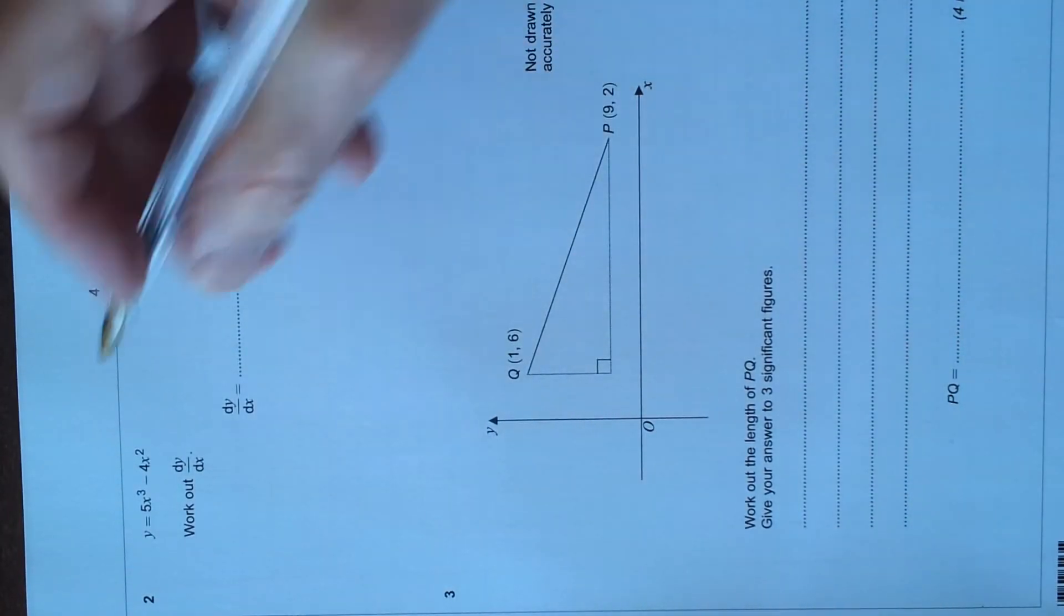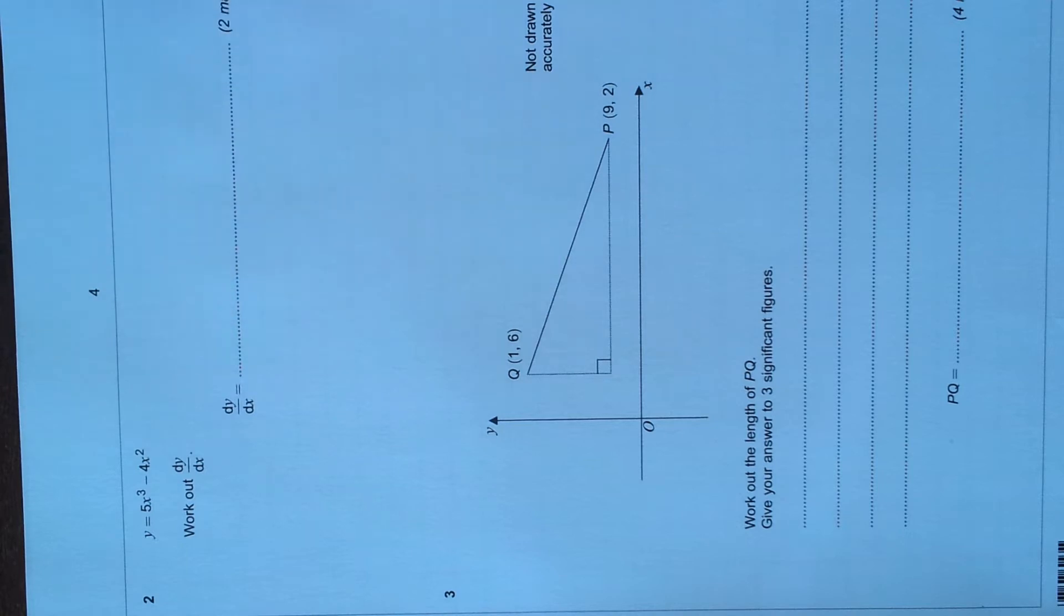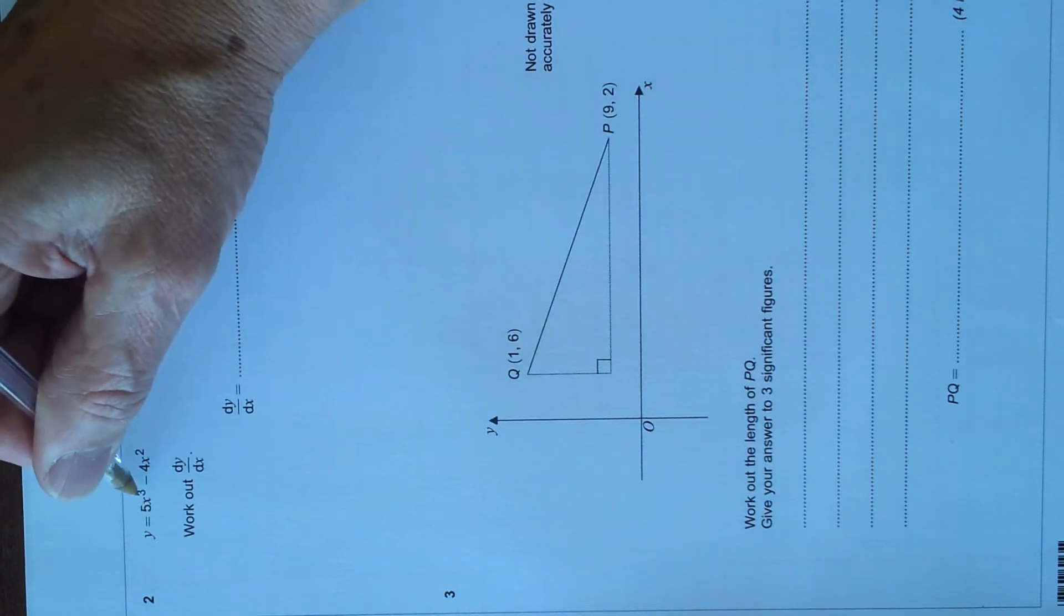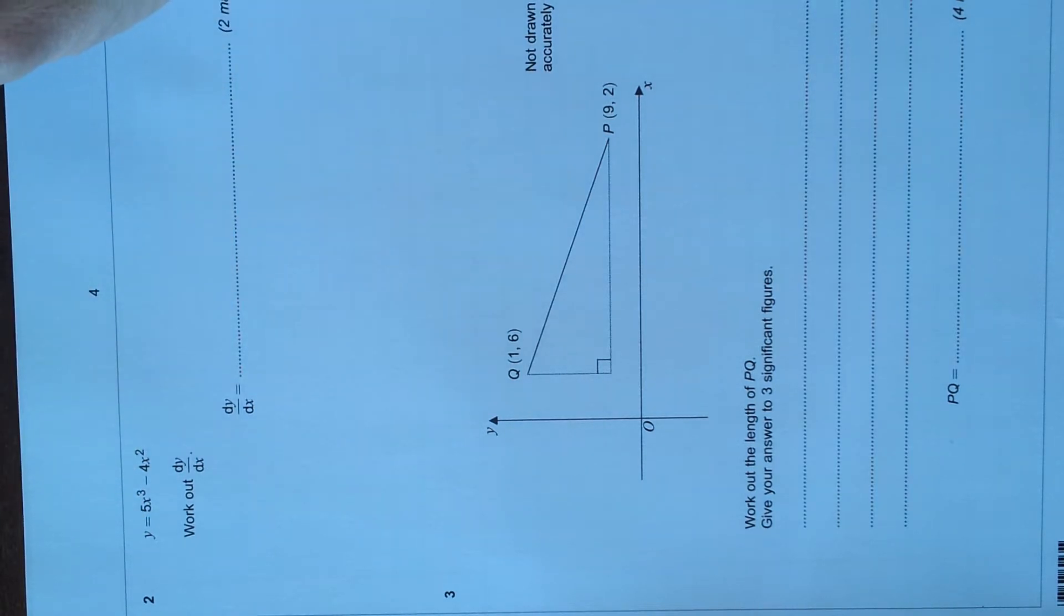Question 2 asks us to work out dy/dx, which is differentiation. Nice easy one. All we do is multiply by the power and reduce the power by 1.